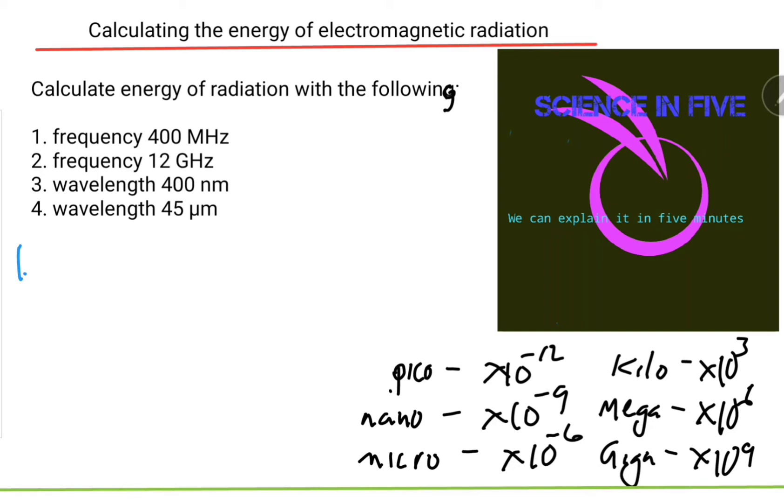Calculate the energy of electromagnetic radiation with a frequency of 400 megahertz. We're going to use E equals hf. The h is 6.6 times 10 to the minus 34, and the frequency is 400 megahertz, which means times 10 to the power of 6. What does that give us?